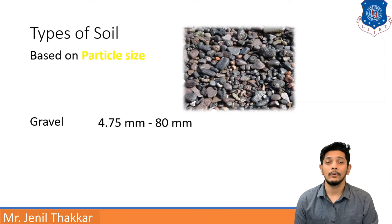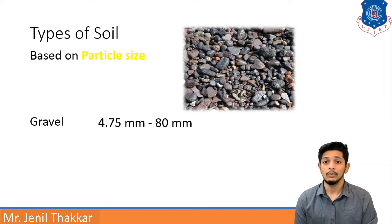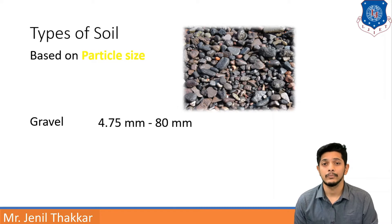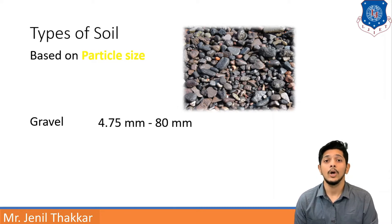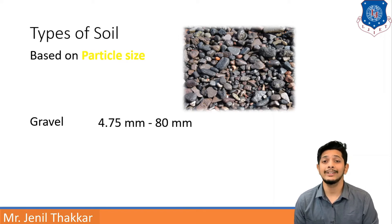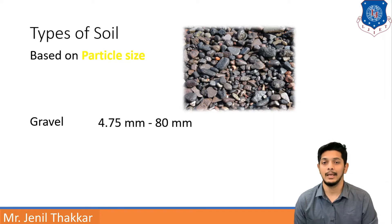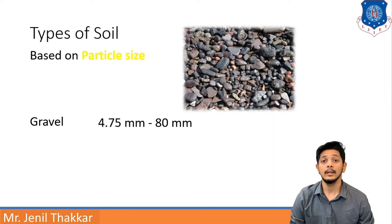Moving forward to gravels — you must have seen this type of soil on river banks, washed over time by continuous pressure of water. Gravels are generally in the size range of 4.75 mm to 80 mm in diameter.